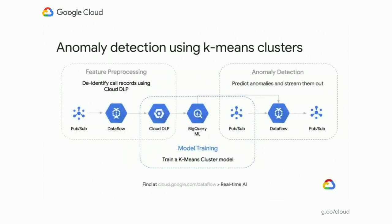This solution is also structured into three steps: the feature pre-processing step, the model training step, and the anomaly detection step. In the feature pre-processing step, Dataflow reads data from Pub/Sub — the call records — and uses Cloud DLP to anonymize the incoming records. All Cloud DLP records are stored in BigQuery, and we use BigQuery ML to train a k-means cluster model. This model is then used in a parallel Dataflow pipeline, which reads the same Cloud DLP records and scores them against the model. The anomalies that are found are output into Pub/Sub for further action.